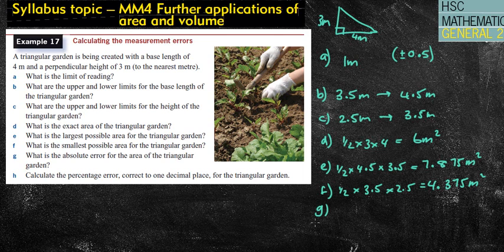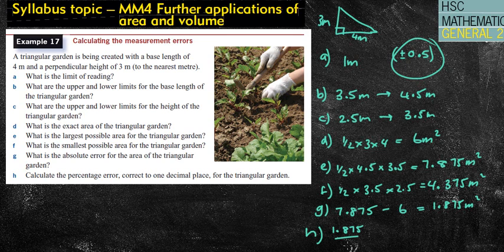G asks now for what is the absolute error for the area of the triangular garden. Now, it's the absolute error of the area, not of the sides. That's just of one side. We want the area. So we want the maximum area of 7.875 minus our real length of 6 meters, which gives me 1.875 meters squared. That's my maximum possible area or my absolute error. And then H, the percentage error. So it doesn't want the relative error, just the percentage error. So we've got 1.875 over my real area of 6, which is the relative error, times that by 100, we get 31.25%. And I probably should put a plus or minus there.